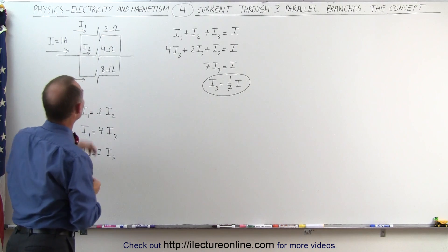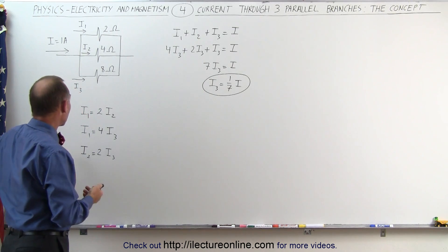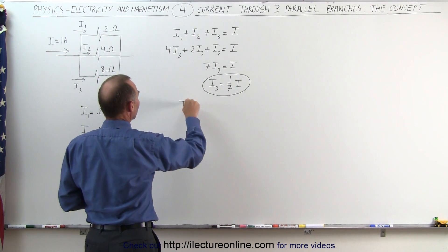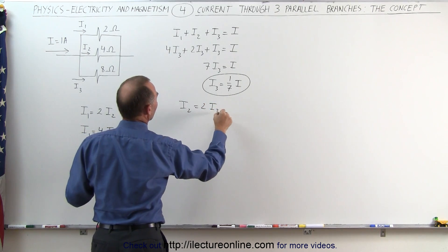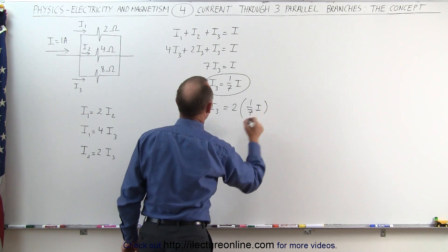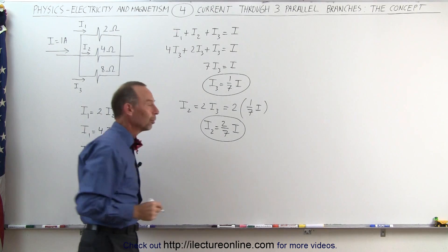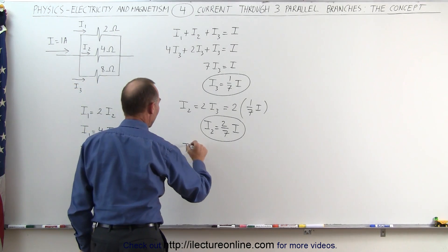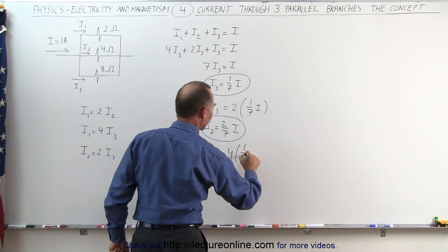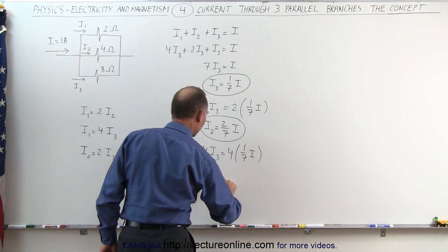With this arrangement, one-seventh of the total current flows through the bottom branch. We can also calculate the other branches since I1 and I2 are written in terms of I3. For I2: since I2 equals twice I3, and I3 is one-seventh I, this becomes two times one-seventh I, so I2 equals two-sevenths I. For I1: since I1 equals four times I3, which is four times one-seventh I, I1 equals four-sevenths of the total current.